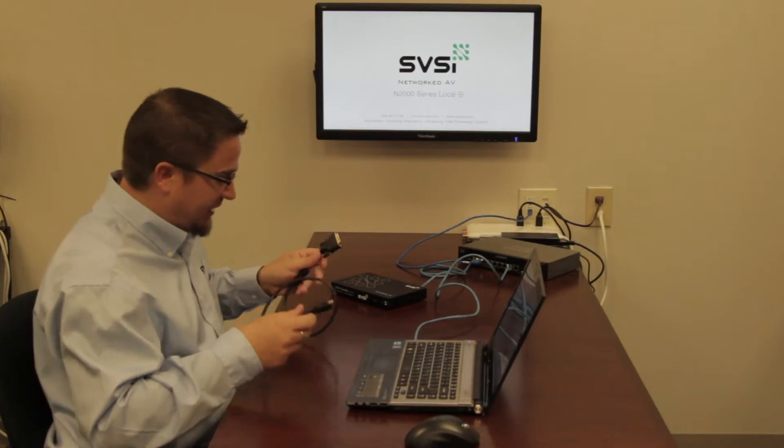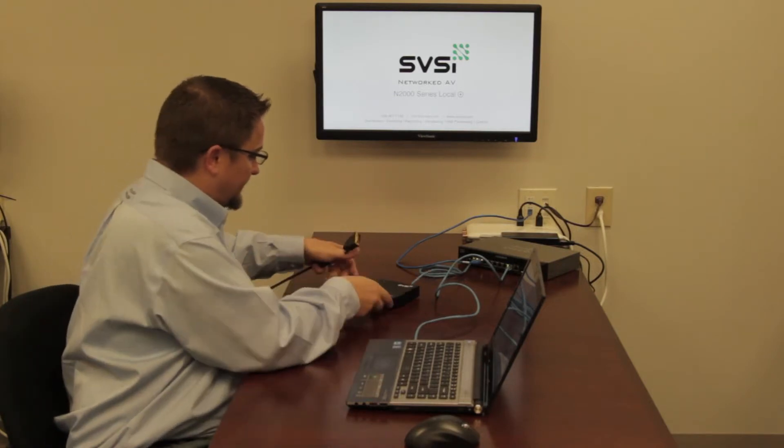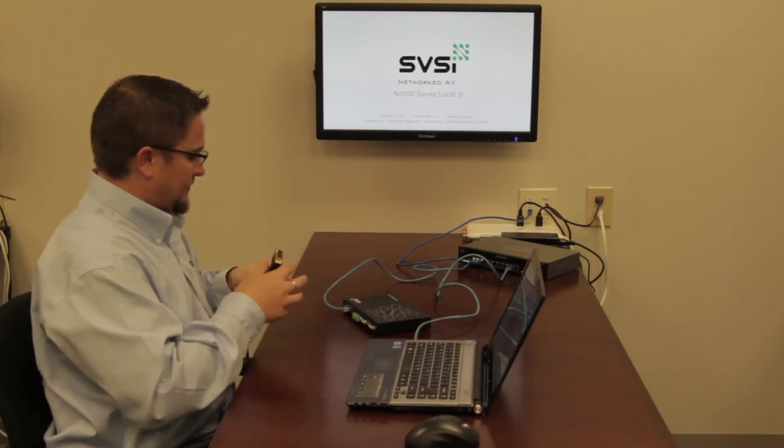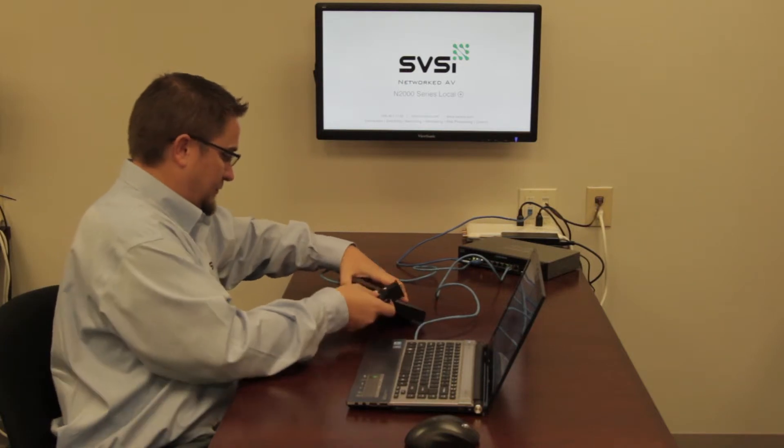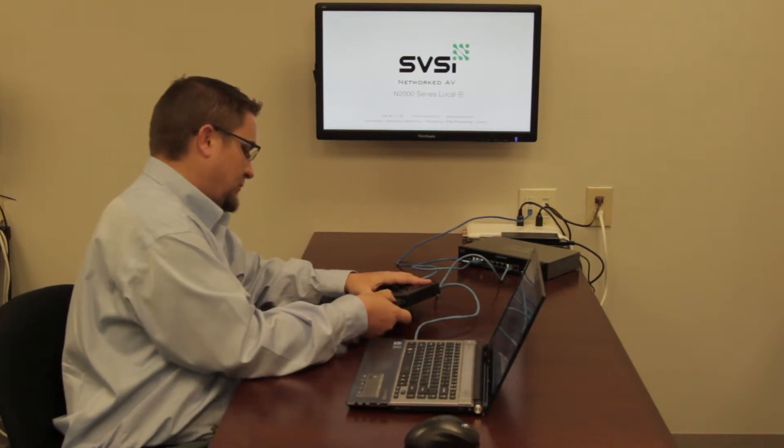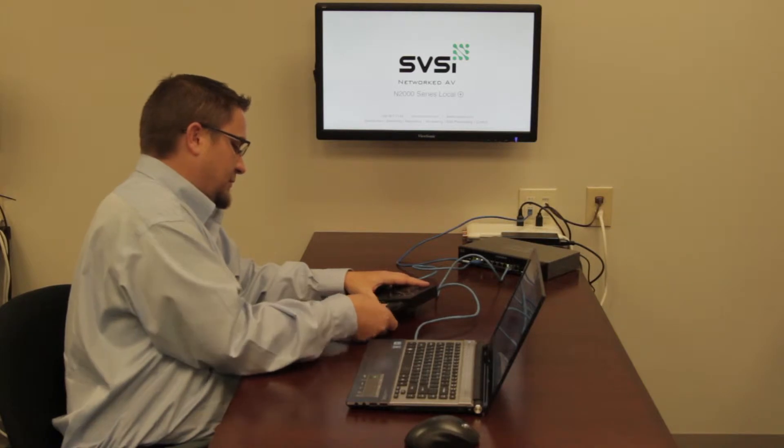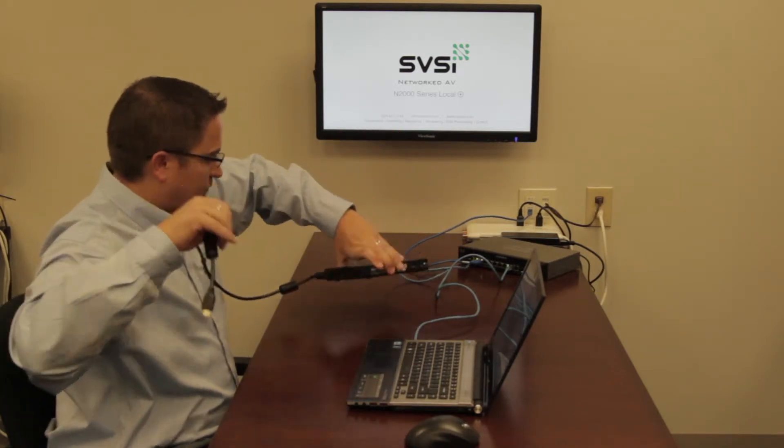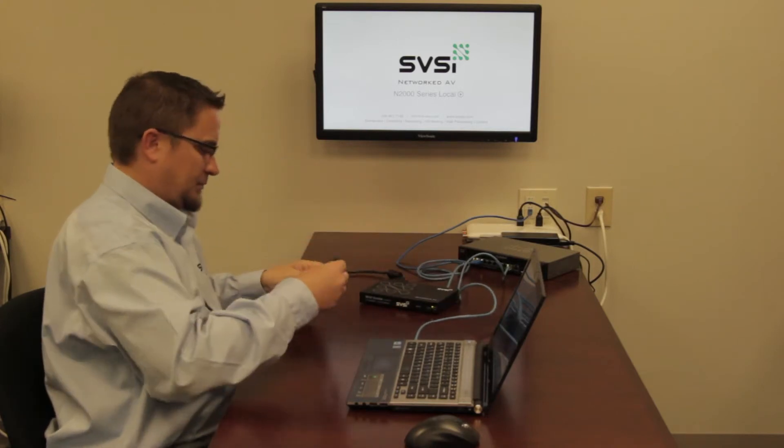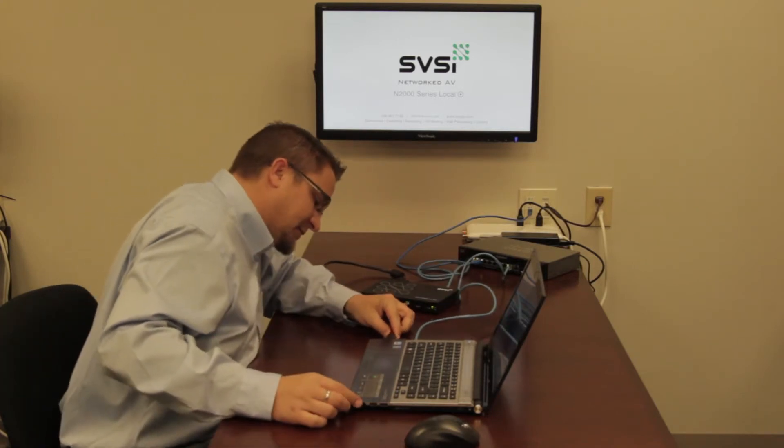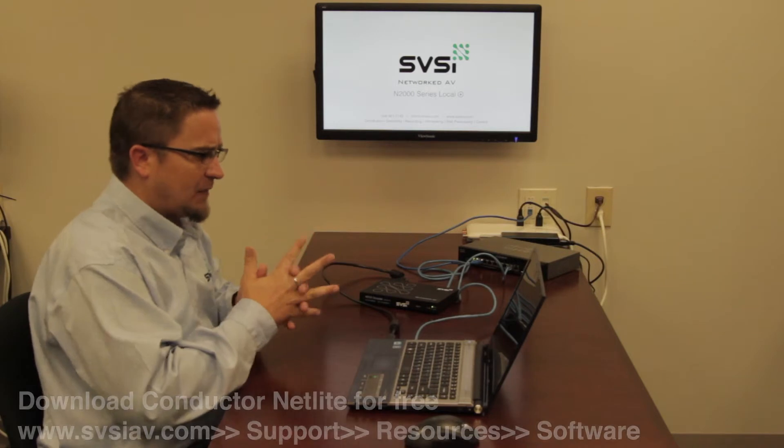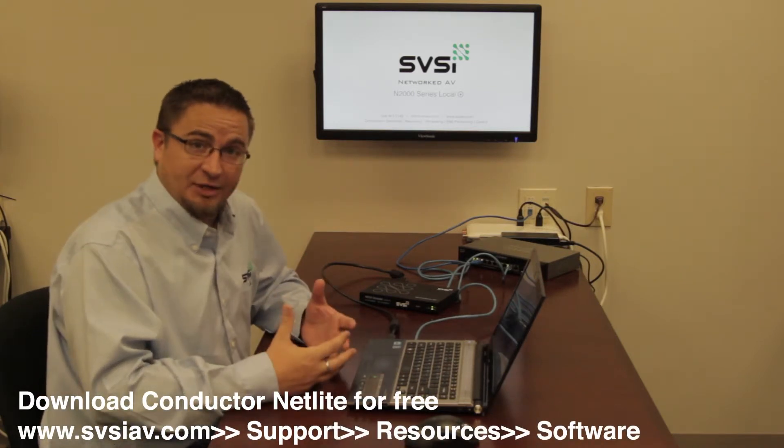Now I'm going to take my DVI-HDMI adapter and connect this to my laptop to the encoder. Plug this into my laptop's output. Okay, so now all of my physical connections are done.